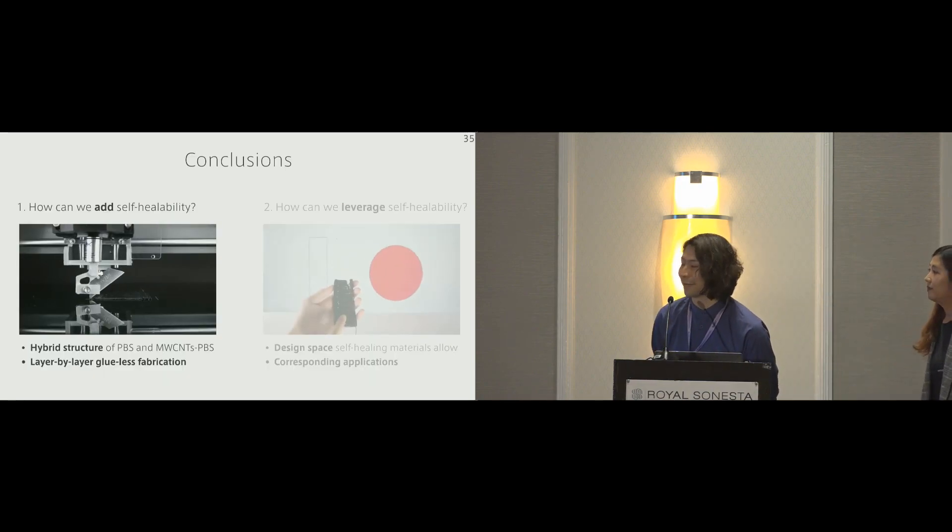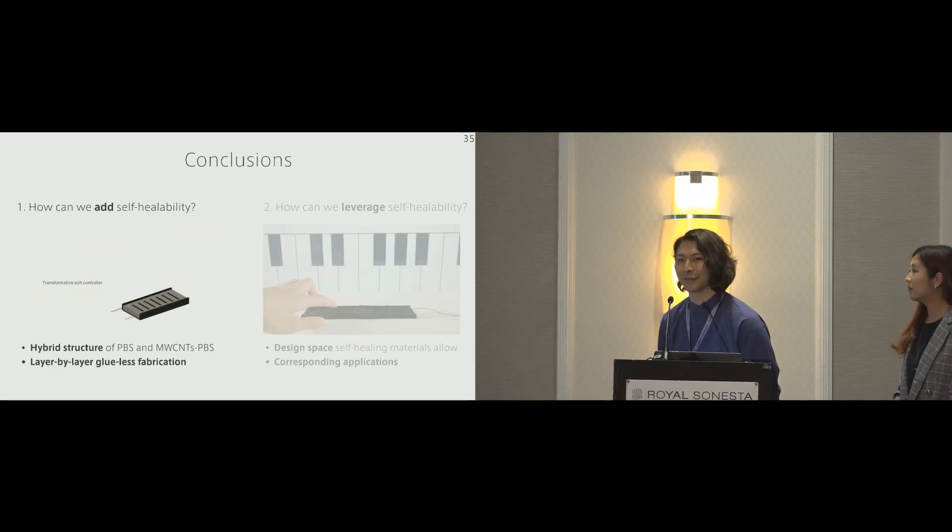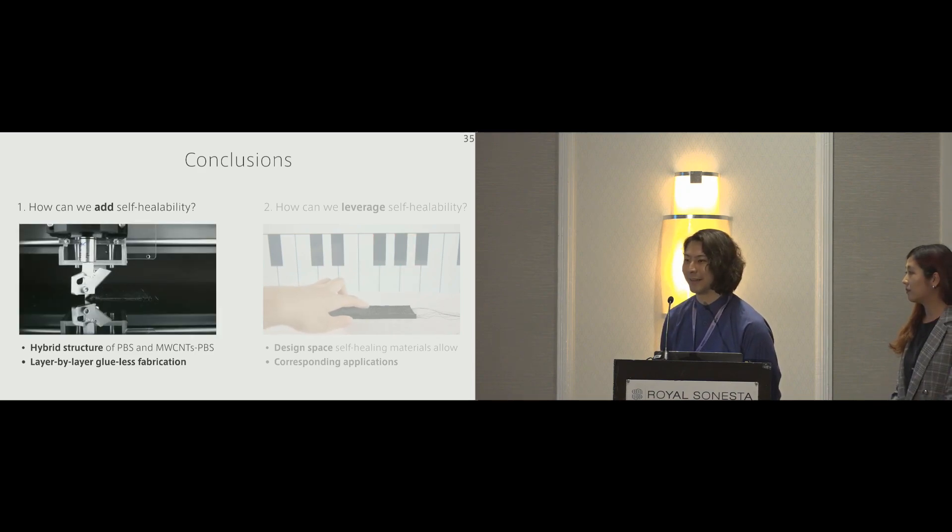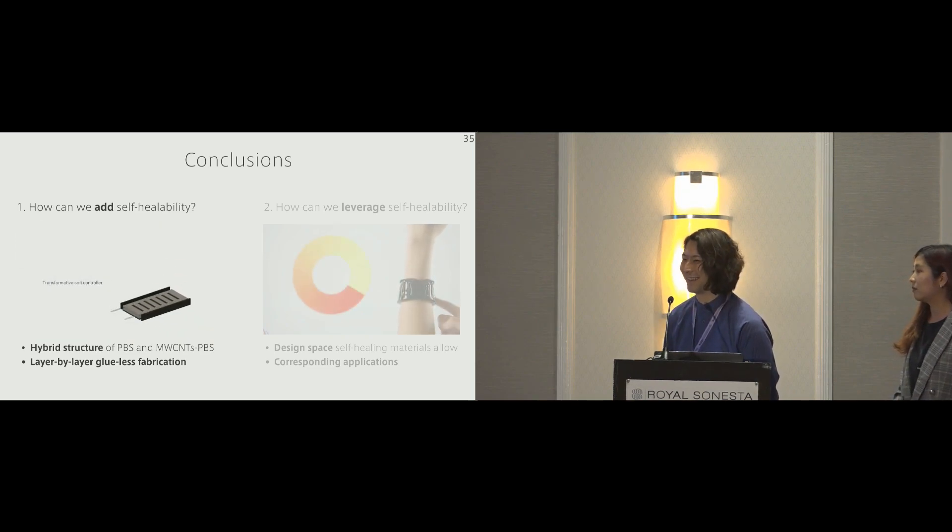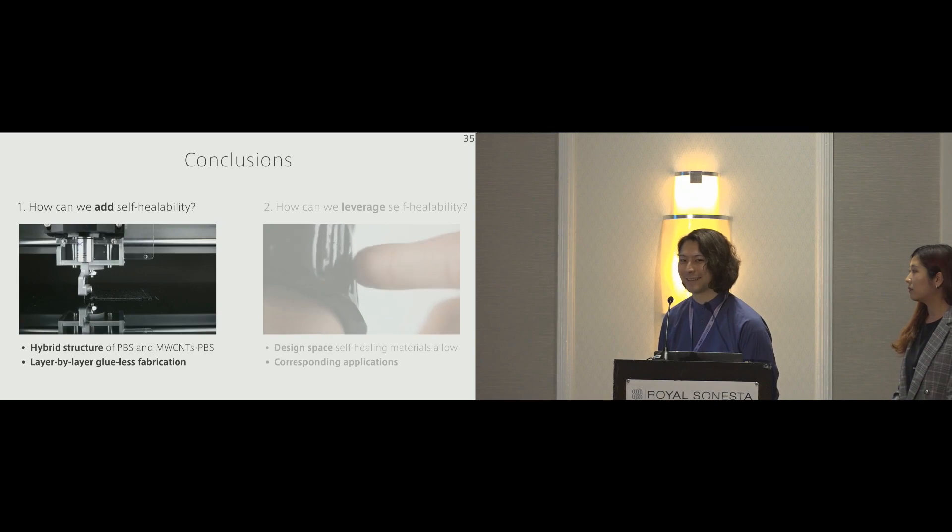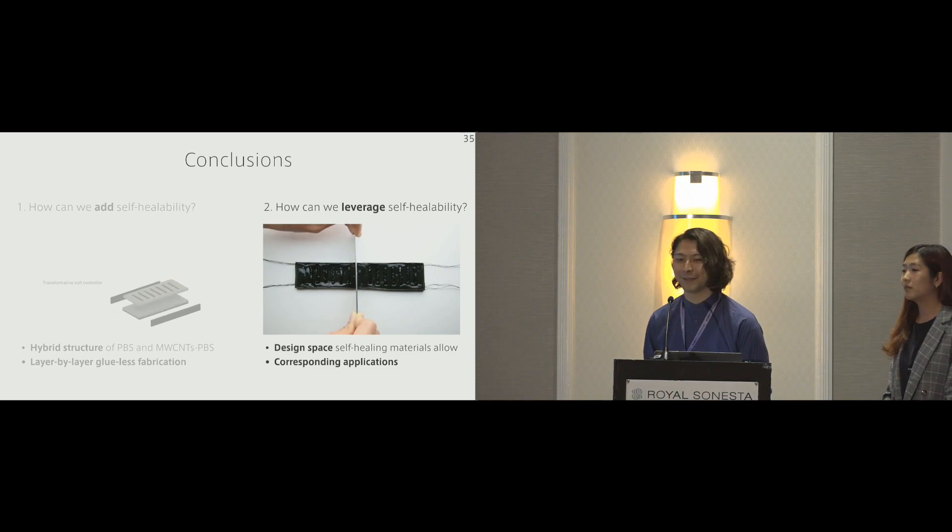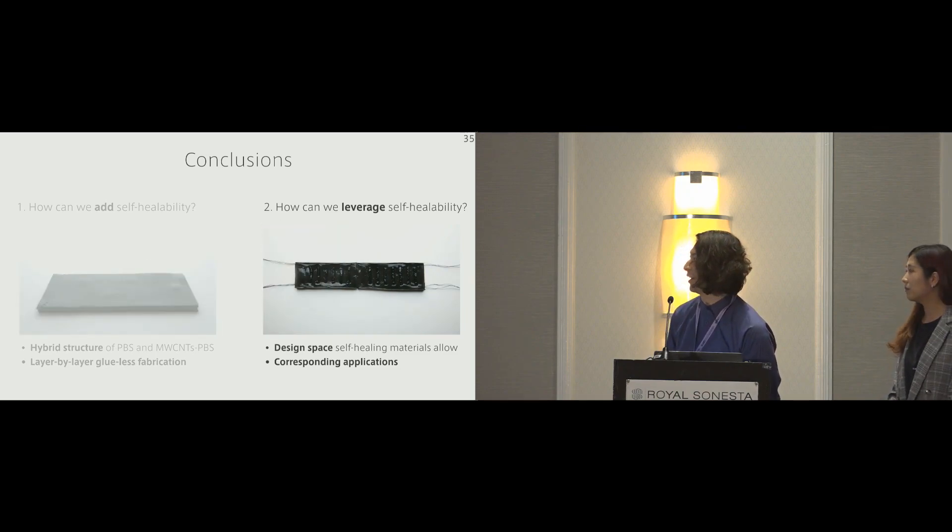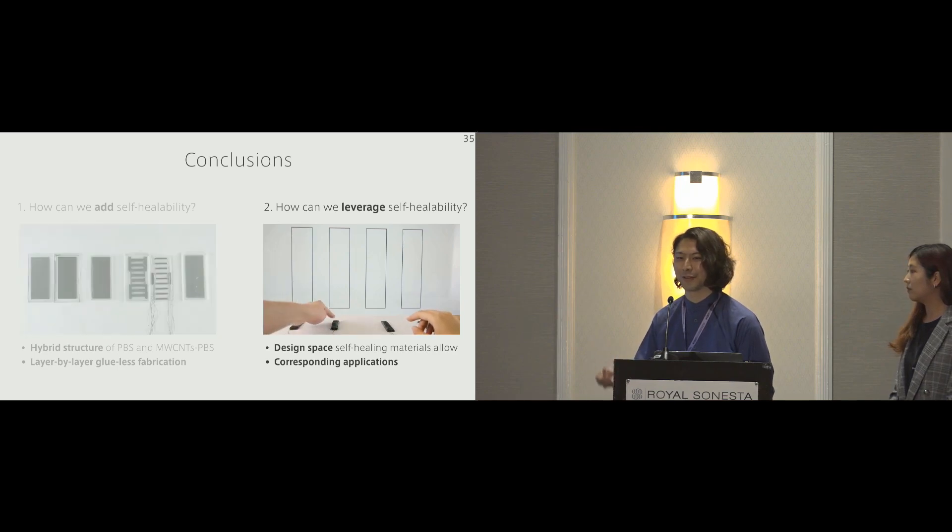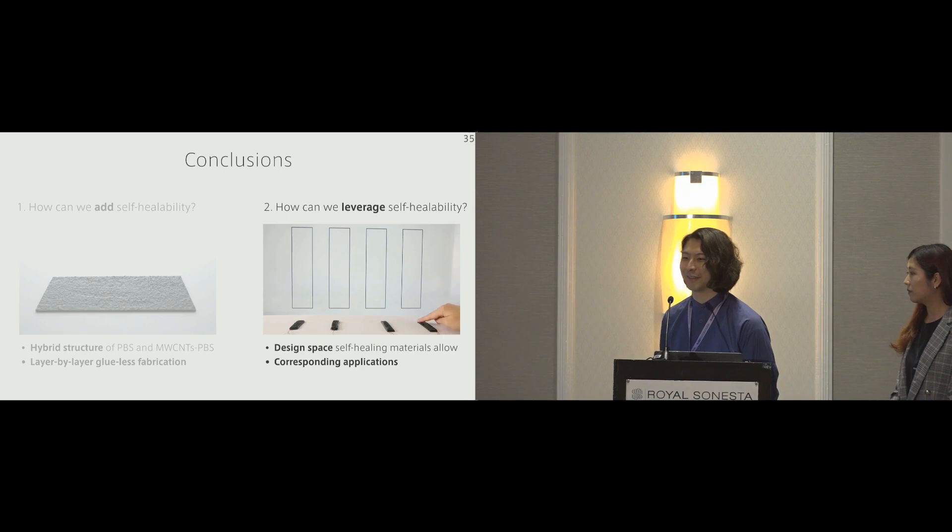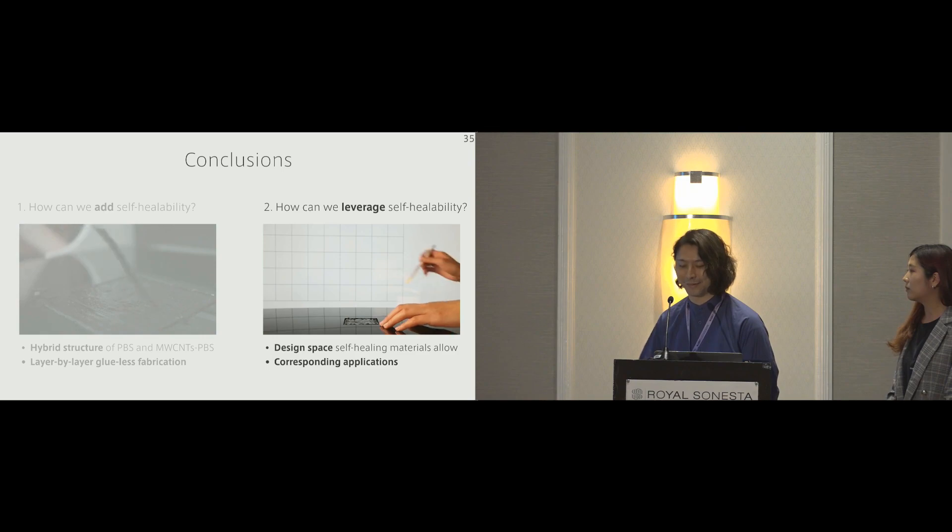So here are conclusions. I proposed two research questions. The first question was, how can we add self-healability? We proposed a hybrid structure of PBS, multi-walled carbon nanotubes, and other components, and built a layer-by-layer glueless fabrication method. As for the second question of how can we leverage the self-healability, we proposed the five design spaces of transformable, conformable, reconfigurable, healable, and fusible nature, which self-healing materials can allow, and proposed five corresponding applications to them.